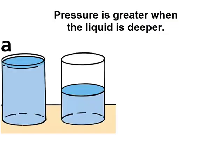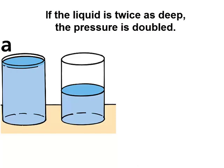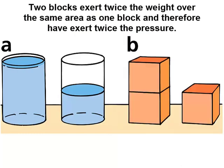For any given liquid, the pressure on the bottom of the container will be greater if the liquid is deeper. In picture A, the liquid in the first container is twice as deep, so the pressure on the bottom is twice that of the second container. In picture B, two blocks exert twice as much pressure on the table.